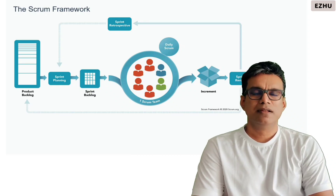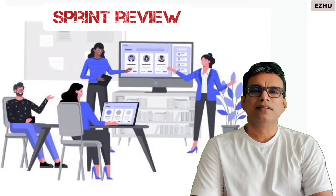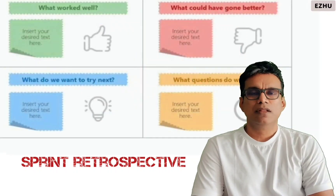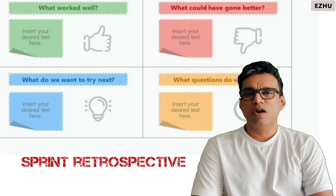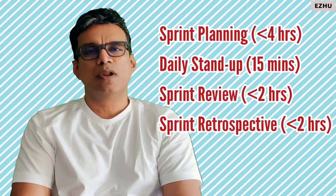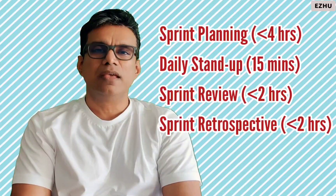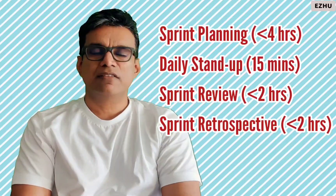The sprint review is a product demo given to the product owner. Following the demo, there is a sprint retrospective where the team discusses what went well, what did not go well, areas of risk, and points to escalate. Sprint planning is typically done for a maximum of four hours, daily stand-up calls for 15 minutes, the sprint review for a maximum of two hours, and the sprint retrospective for a maximum of two hours as well.